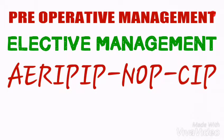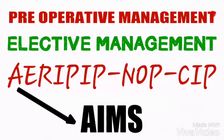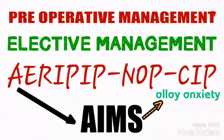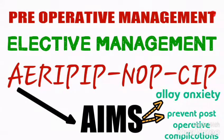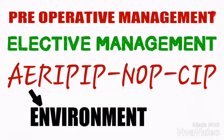The first letter in the acronym RP NOB SIP stands for Aims. Under aims, you write or talk about what you want to achieve before the date of the operation. One general aim is to allay the anxiety of the patient, and the other is to prevent post-operative complications.